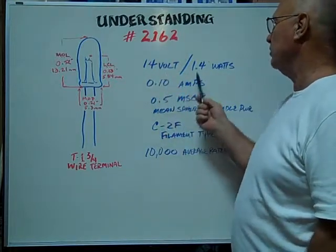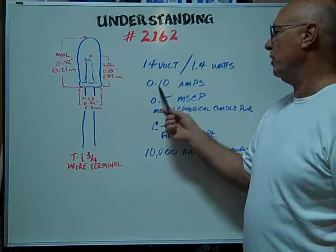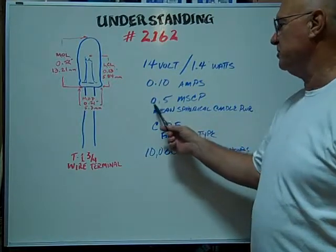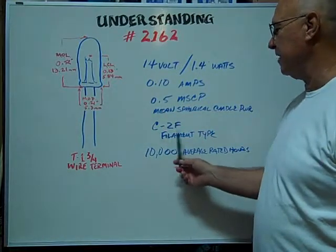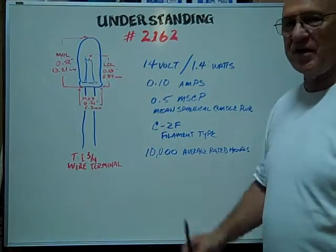It's rated at 14 volts, 1.4 watts, 0.10 amps. The mean spherical candle power is 0.5. Filament type is a C2F. The average rated hours is 10,000 hours.